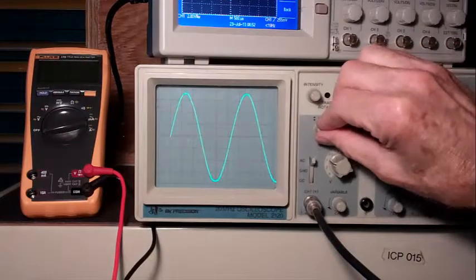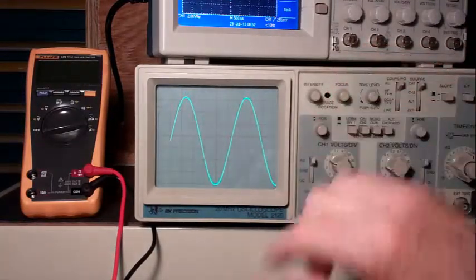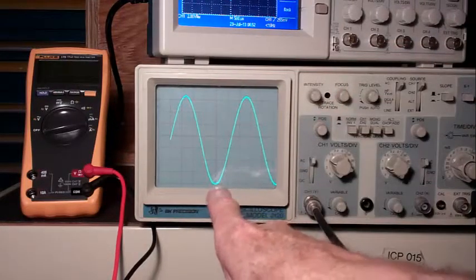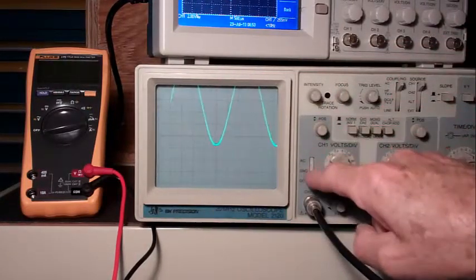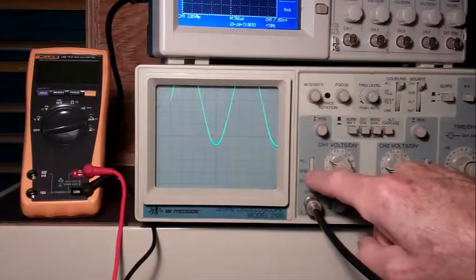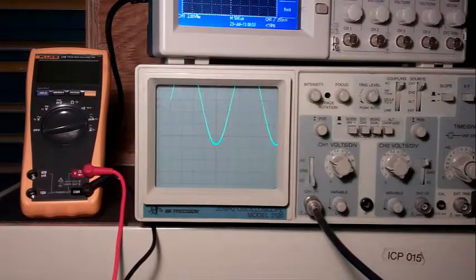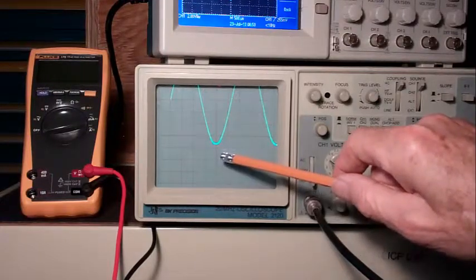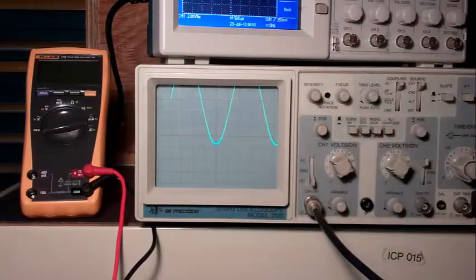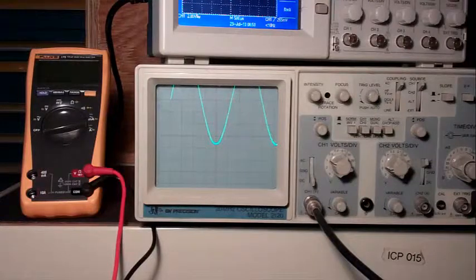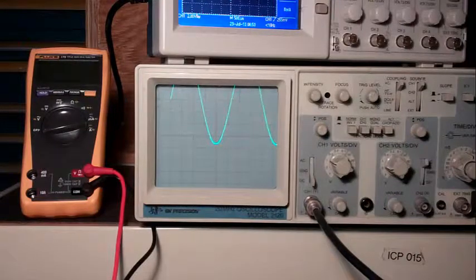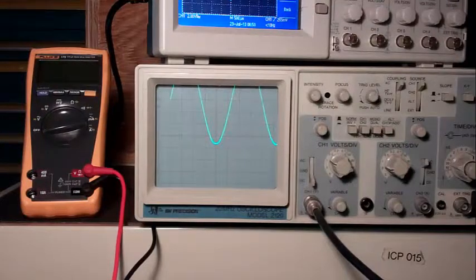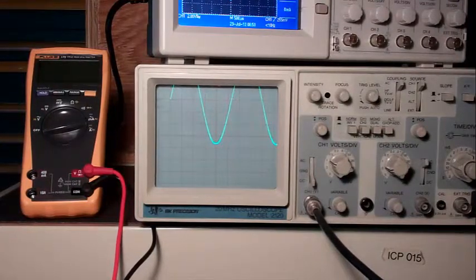I'll move the peak to the bottom grid line, allow the DC signal in, and that DC signal is 1, 2, 3.3 divisions DC.